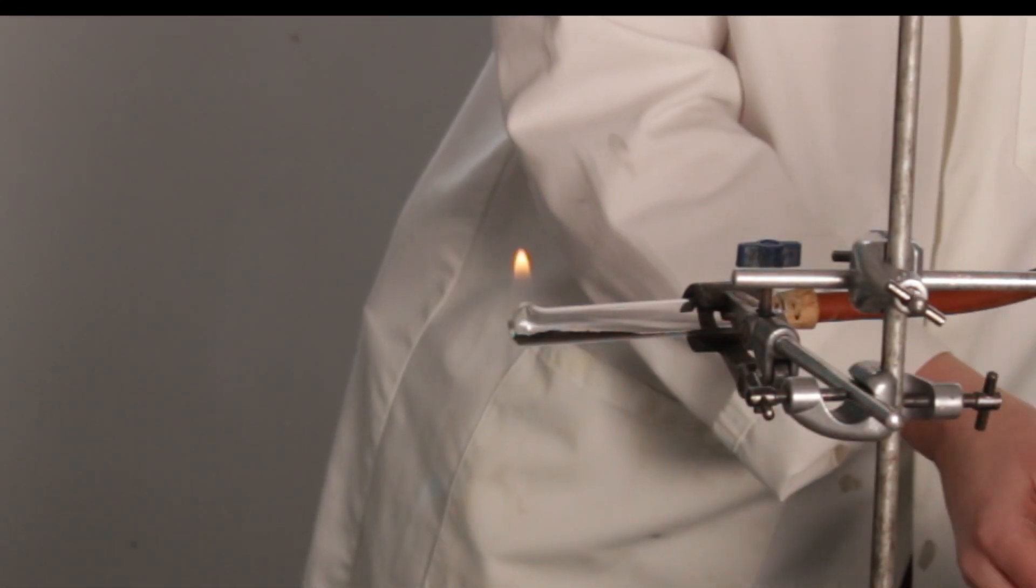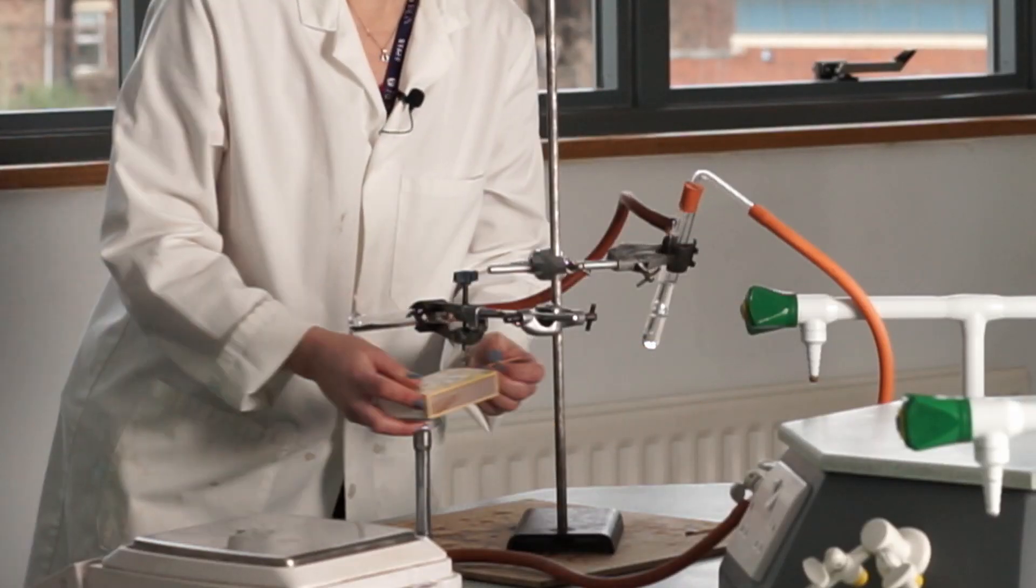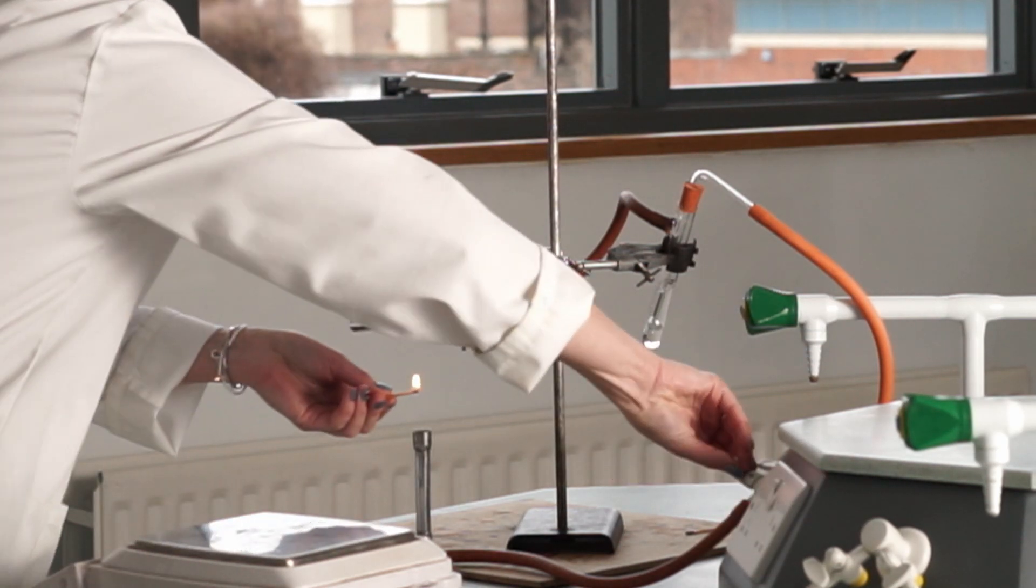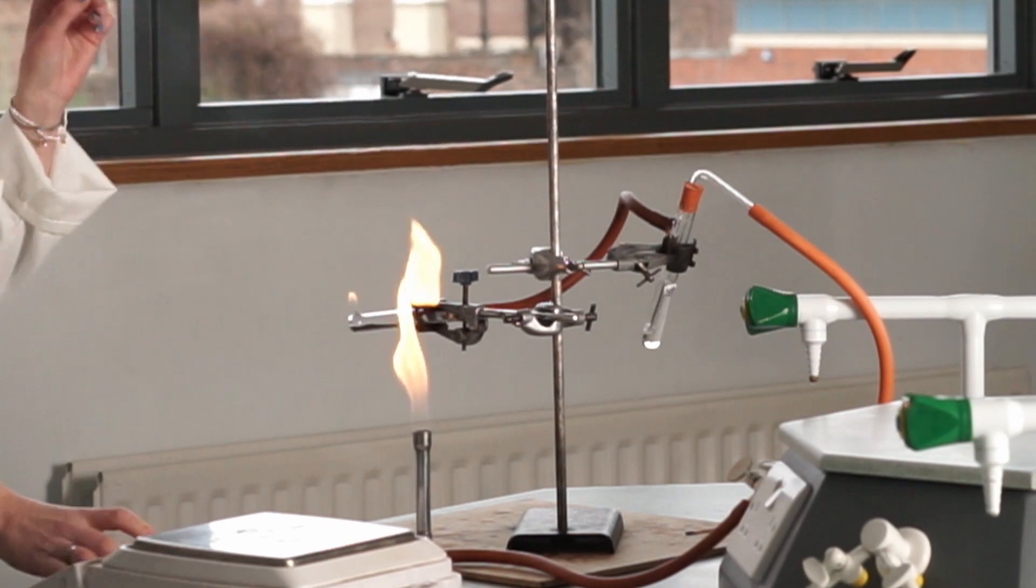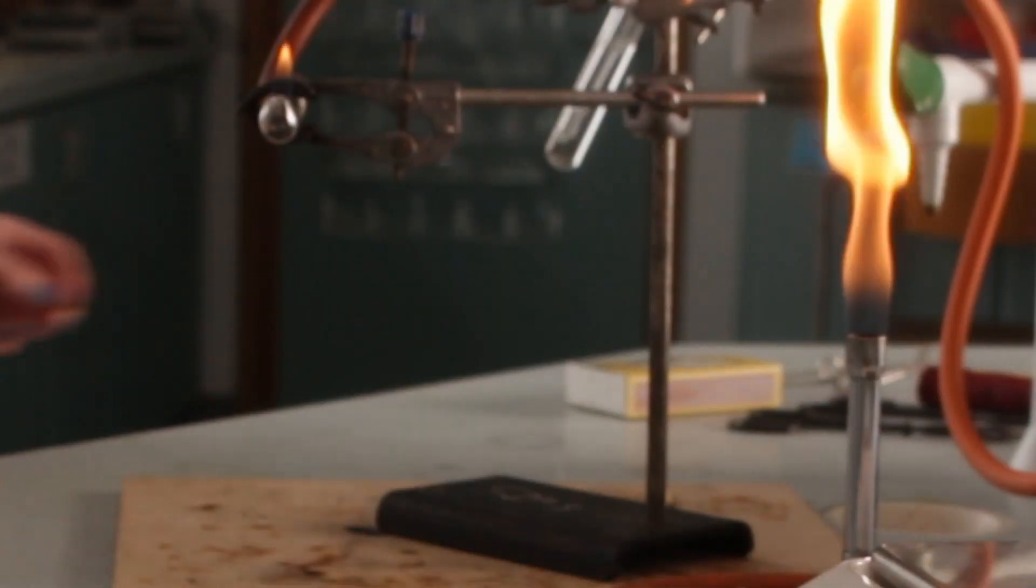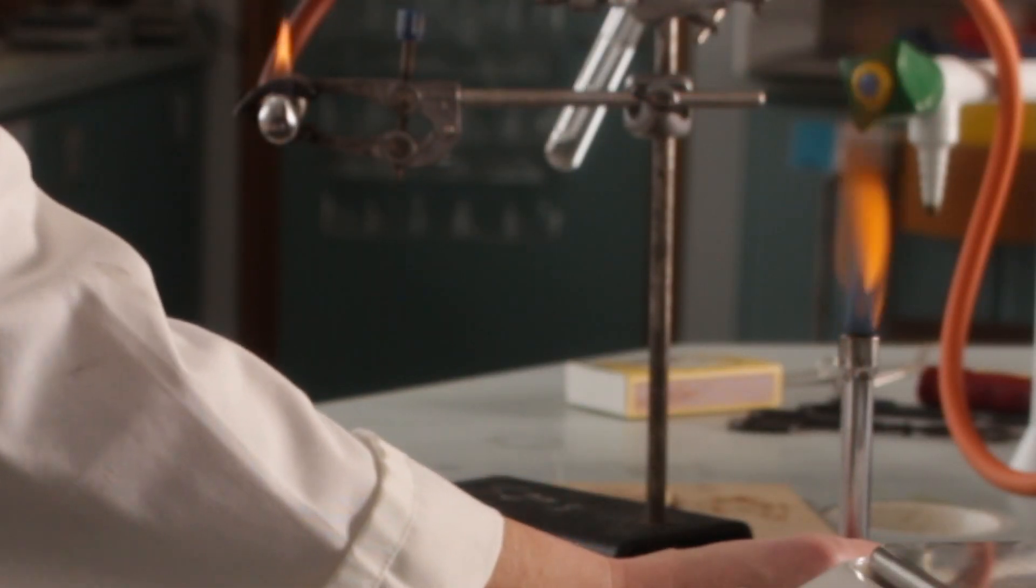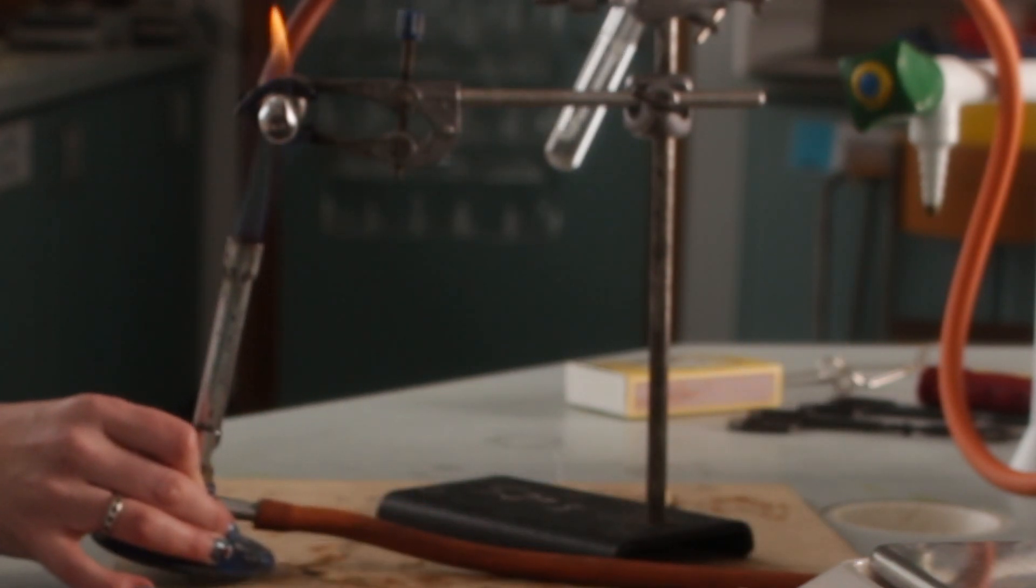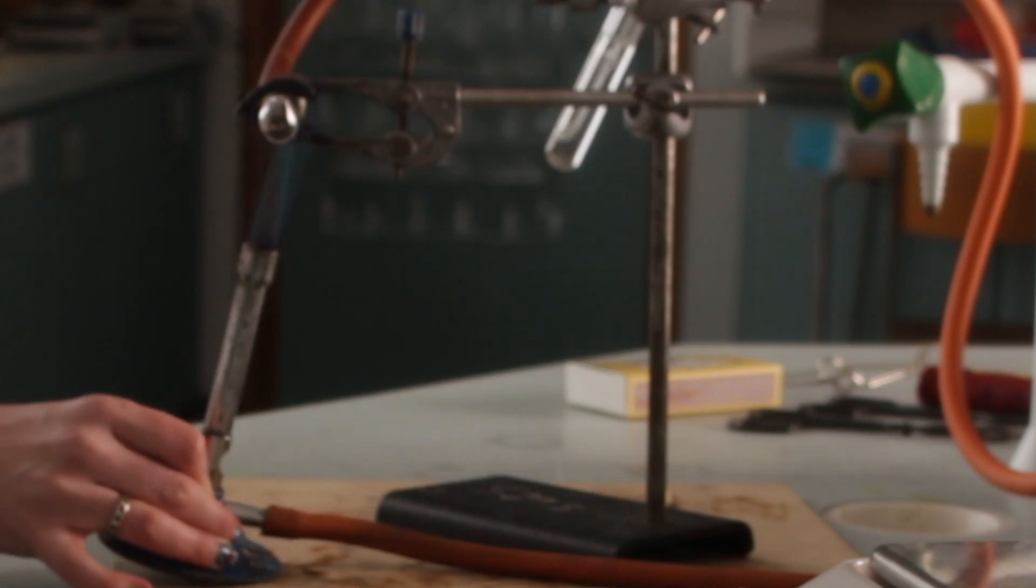So I've got the methane coming through that system. Now I'm going to light my Bunsen burner. And I'm going to use this to strongly heat the copper oxide.